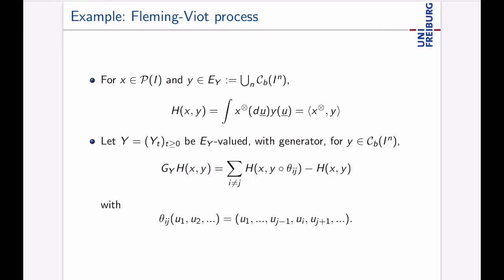So let me make an example which is here the Fleming-Viot process which is an important process in mathematical population genetics. Let me just set the scene on the slide here. So what do we need to apply our theorem?